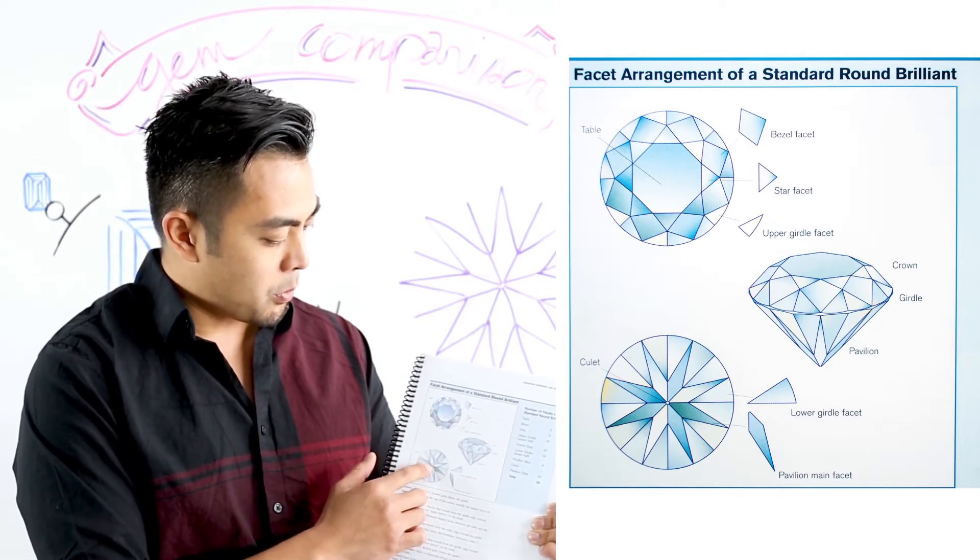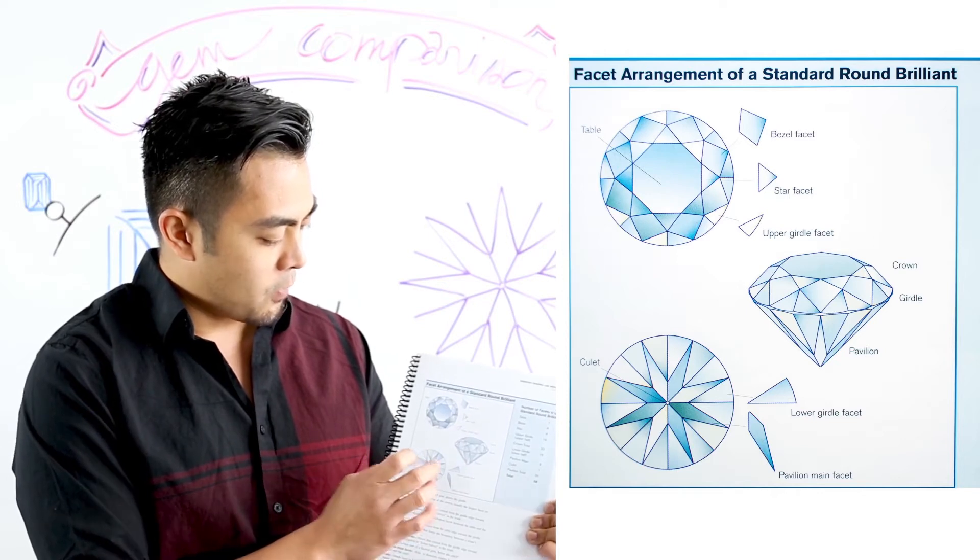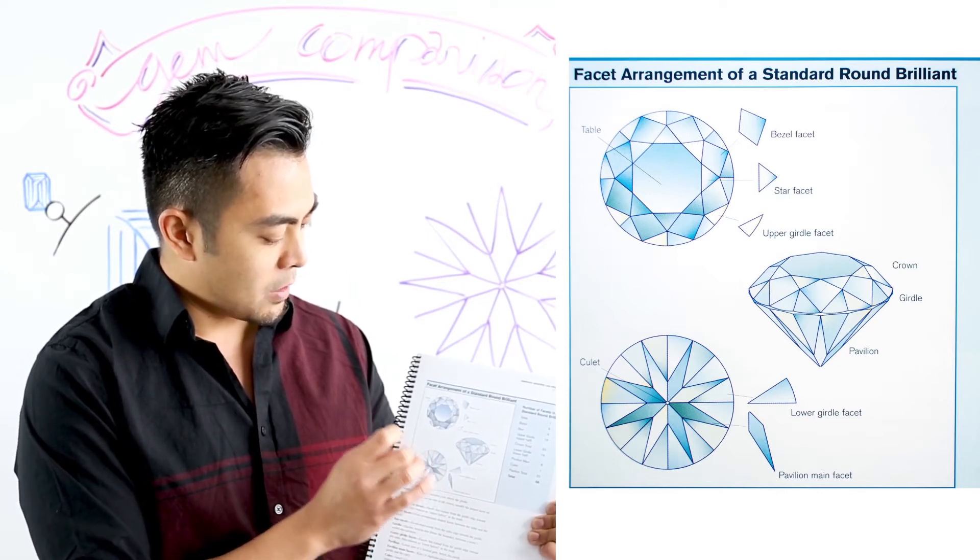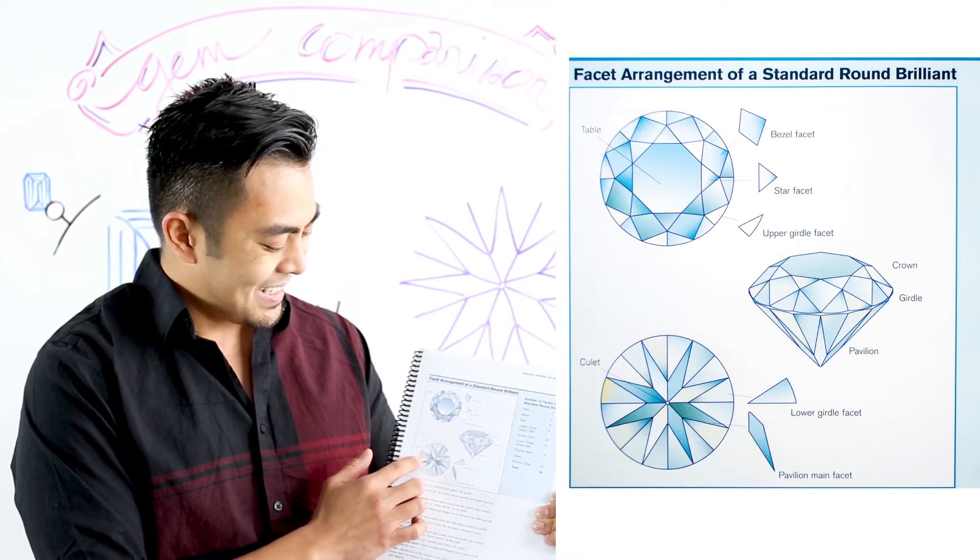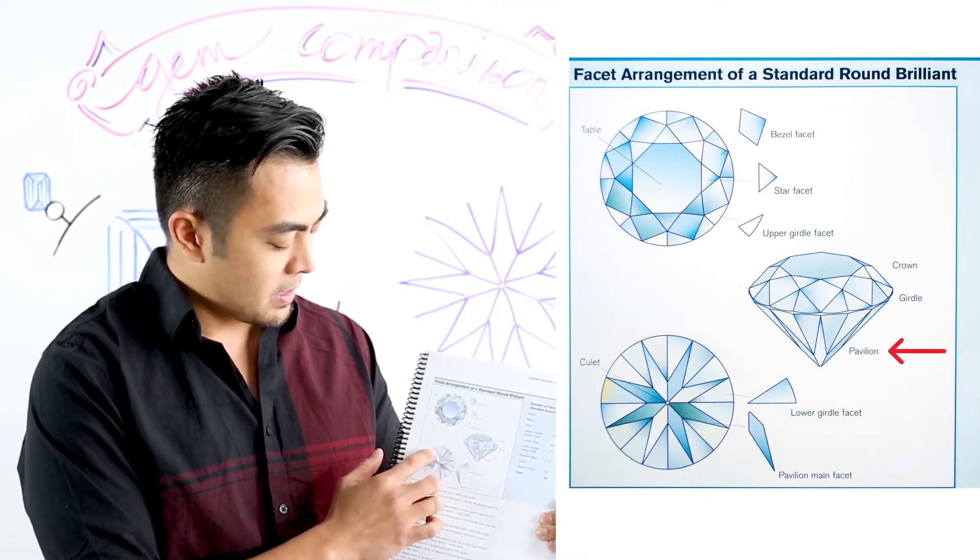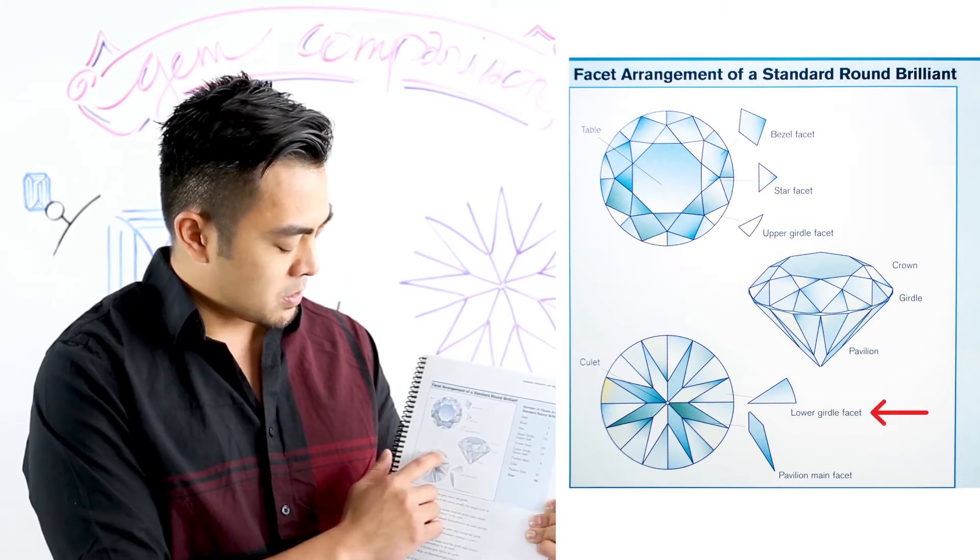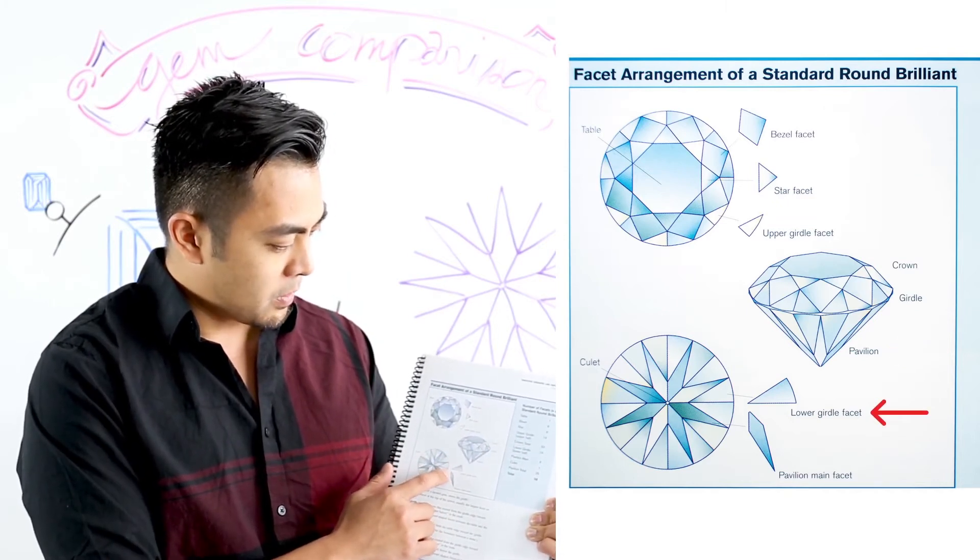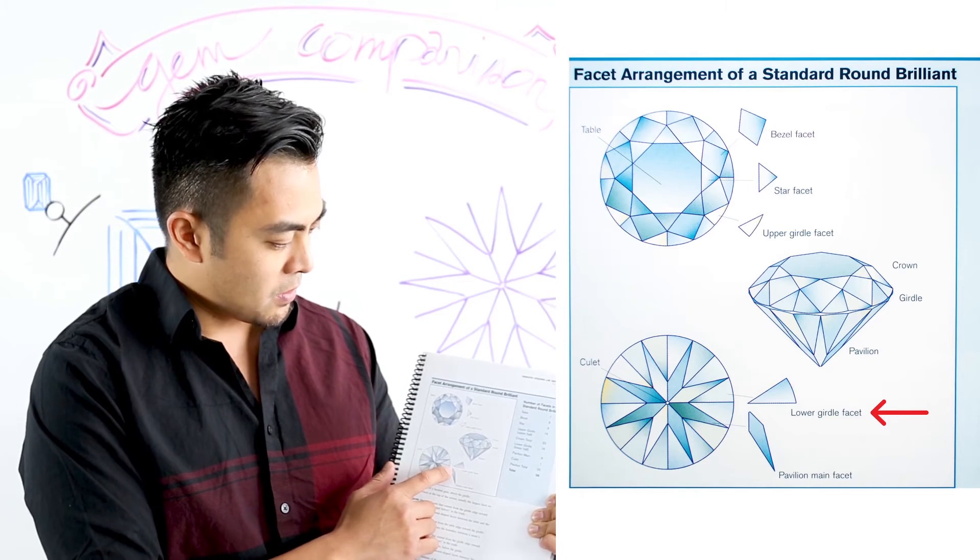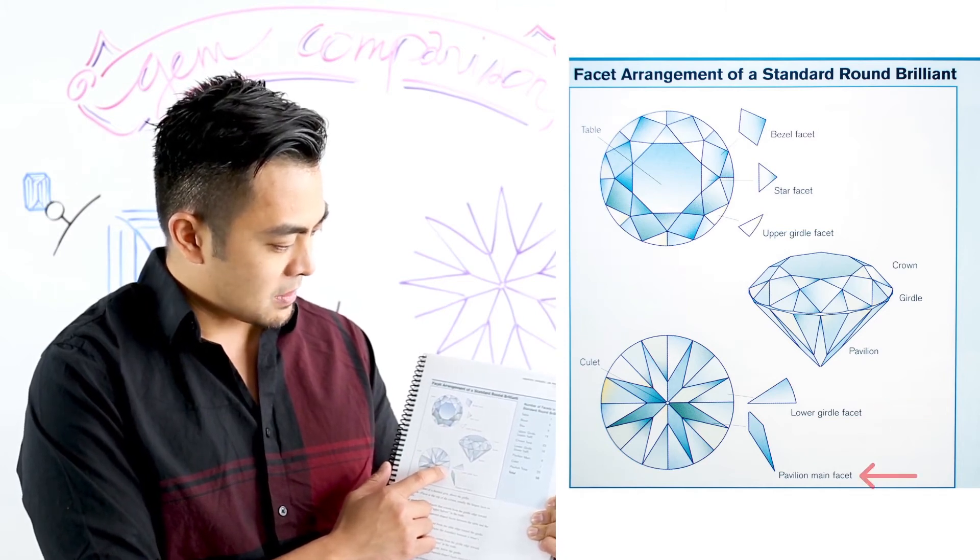Now the bottom portion of the gemstone, specifically for a round shape, is called a pavilion, and there are many facets under the pavilion as well. So there are lower girdle facets which are right below the girdle, there's 16 of them, and then there are pavilion main facets, and there's eight of them.